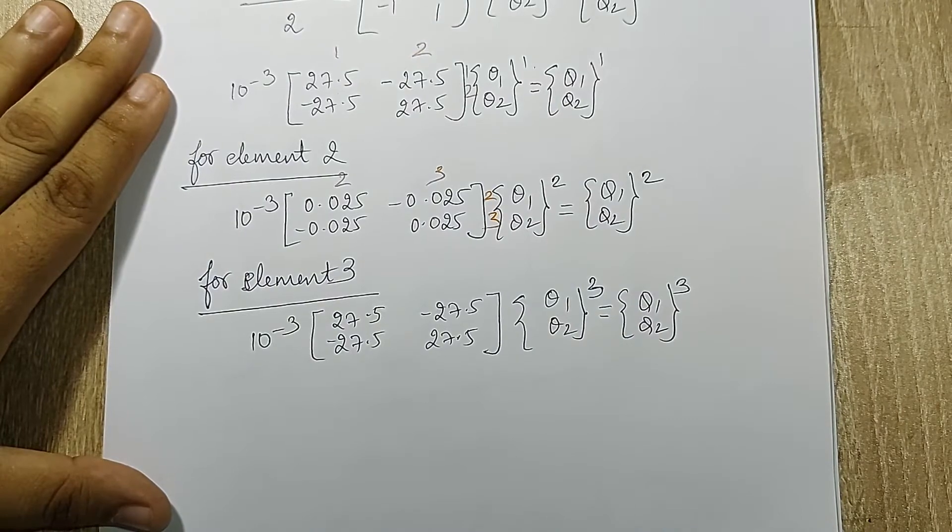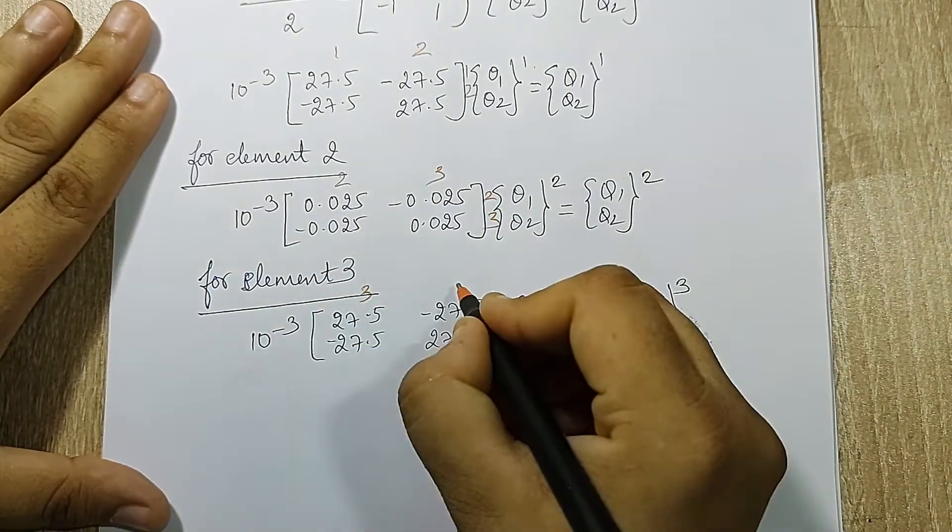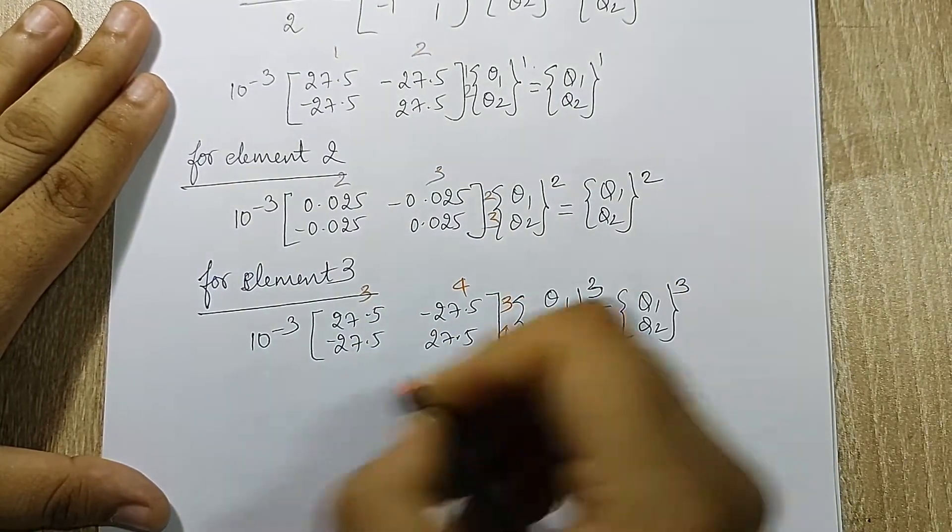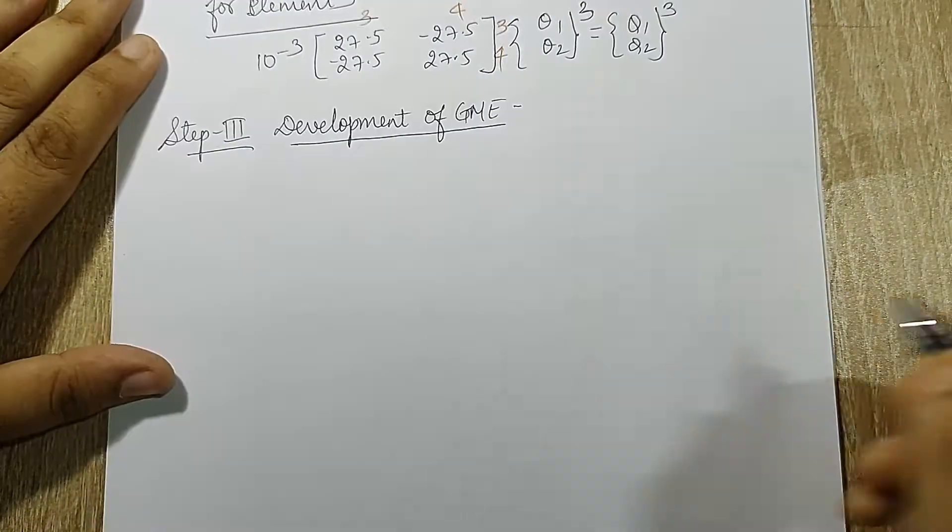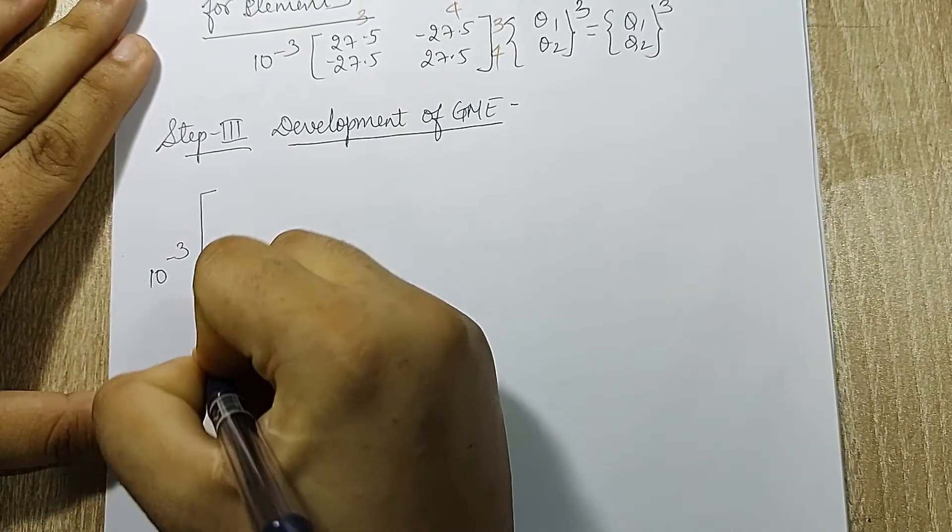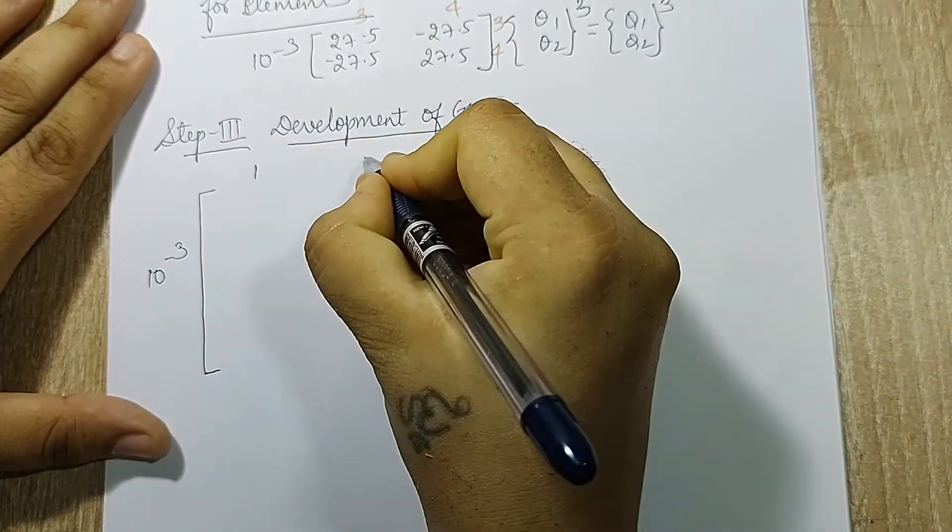Element 3 is between node 3-4. Next I will go for step 3, that is development of GMA. Here I will take 10 raise to minus 3 common. I have 4 nodes.